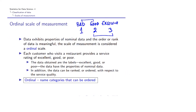The ordinal scale of measurement uses data like bad, good, excellent — here there is an order: good is better than bad, and excellent is better than good. Ordinal data has the properties of nominal data, and additionally the order or rank of data is meaningful. For example, each customer who visits a restaurant provides a service rating of excellent, good, or poor — the data can be ranked with respect to service quality. Ordinal means named categories that can be ordered.